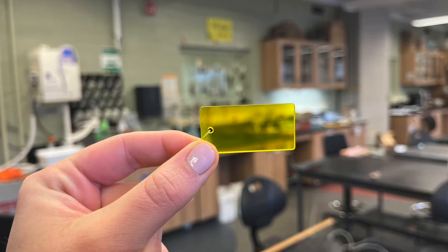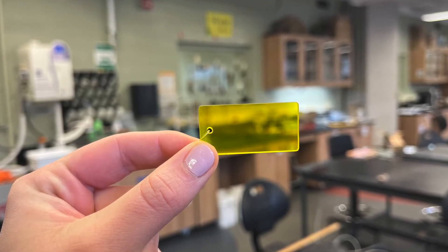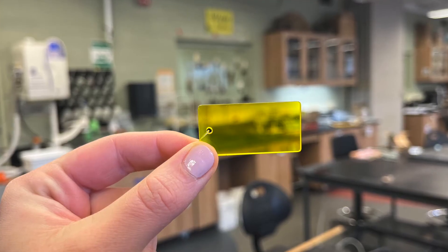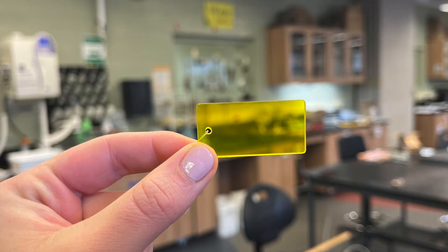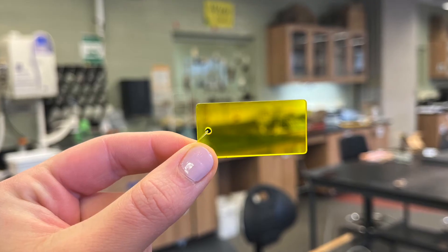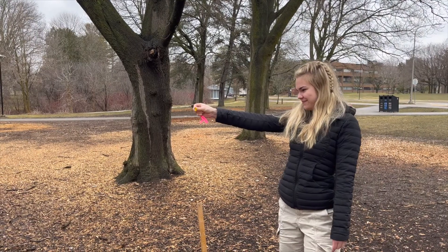Pictured here is a forestry prism. This tool is used to estimate the basal area of trees in a forest. Basal area is the area occupied by the trees in a specific area such as a hectare or acre. In this video, we are demonstrating how to use the forestry prism.